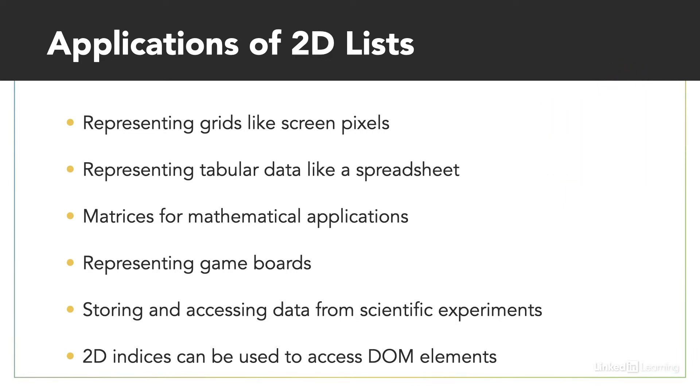Also mathematical programming, if we want to represent matrices. And basically whenever you have any kind of tabular data, so the kind of data you would store in a table, like in a spreadsheet, that's other places where 2D lists are very useful. And there's a few others listed.